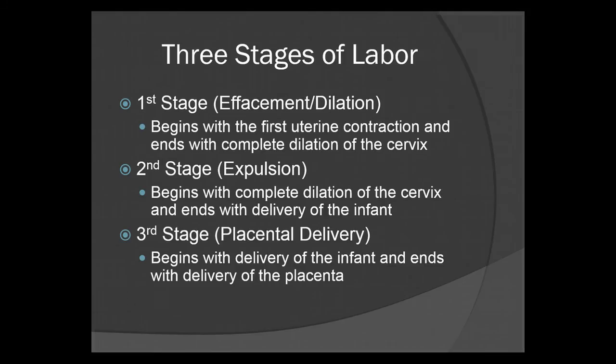To start, we're going to look at the three stages of labor. The first stage being effacement or dilation. This stage begins with the very first uterine contraction and ends with the complete dilation of the cervix. Then the second stage begins, which is the expulsion stage. This begins with the complete dilation of the cervix and ends when the infant is delivered. The final stage of labor is placental delivery. This begins as soon as the infant is born and ends as soon as the placenta has been delivered.